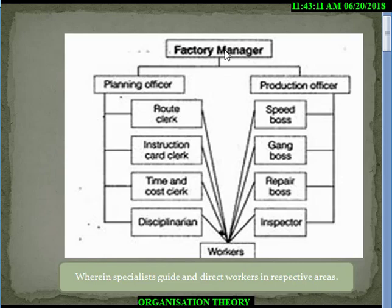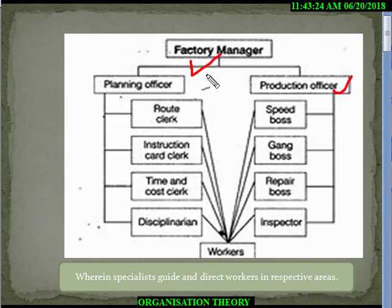So there is a different planning officer and a different production officer — meaning the separation of planning and implementation. We have four people under every planning officer and every production officer.